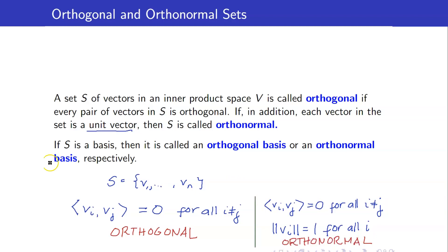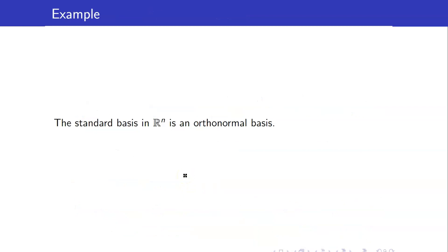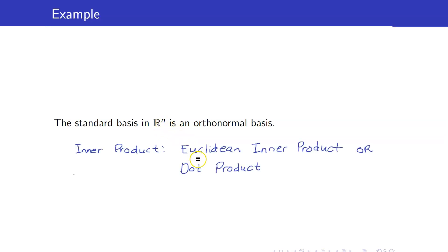If S is a basis and it is orthogonal, we say that it is an orthogonal basis. If S is orthonormal and it is a basis, we say that it is an orthonormal basis. For example, the standard basis in Rn is an orthonormal basis. Note that whenever I give the inner product space Rn and do not indicate the inner product, it automatically means I am referring to the Euclidean inner product or the dot product.